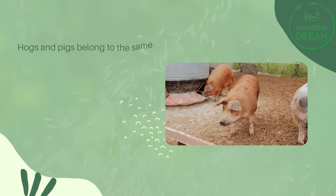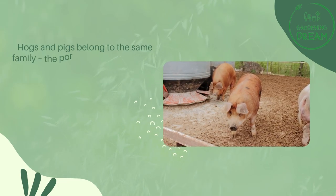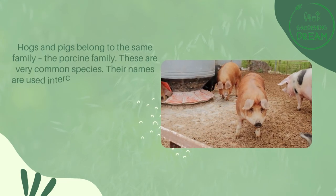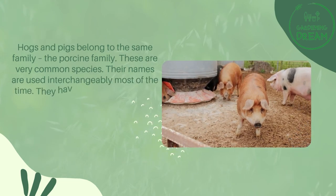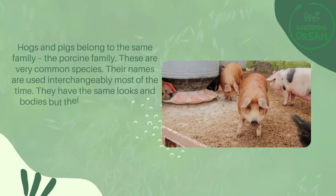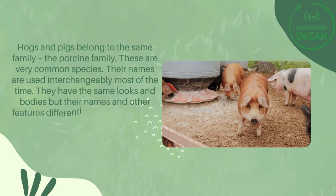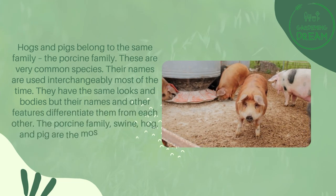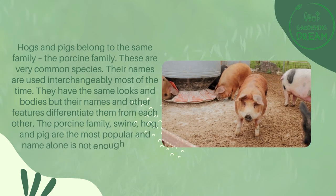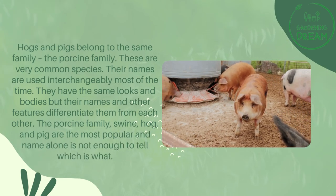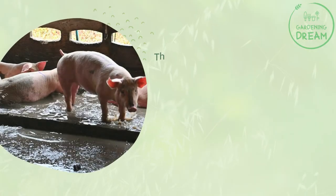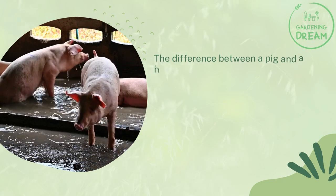Hogs and pigs belong to the same family — the porcine family. These are very common species and their names are used interchangeably most of the time. They have the same looks and bodies, but their names and other features differentiate them. The porcine family includes swine, hog, and pig, and name alone is not enough to tell which is what.